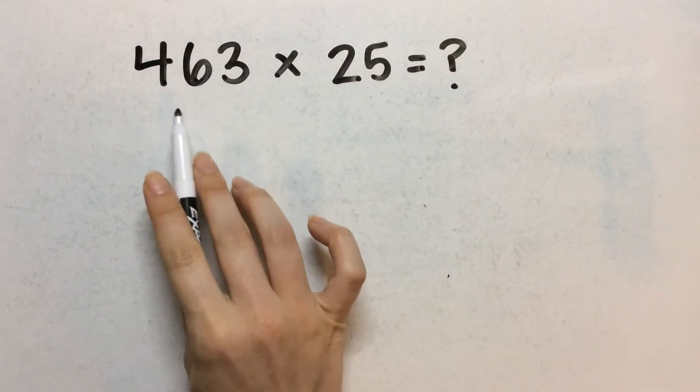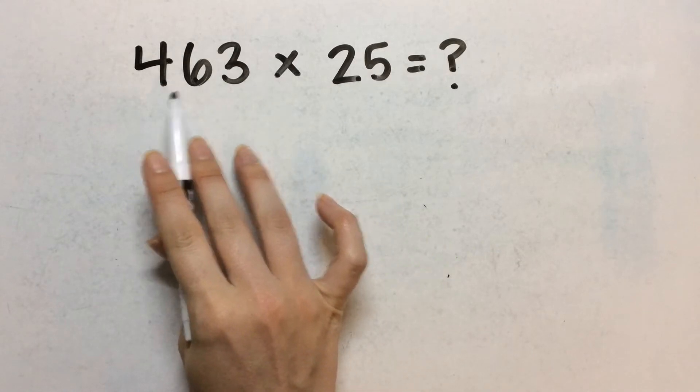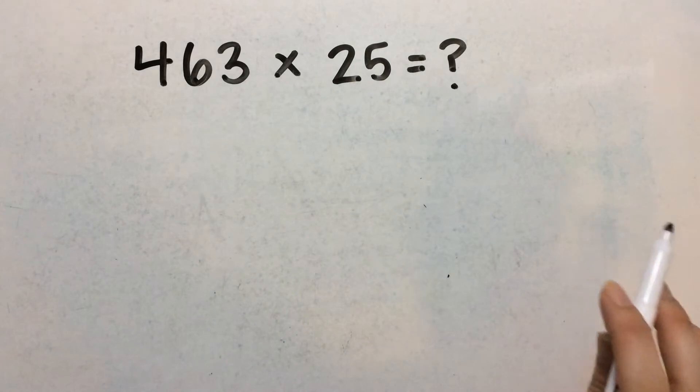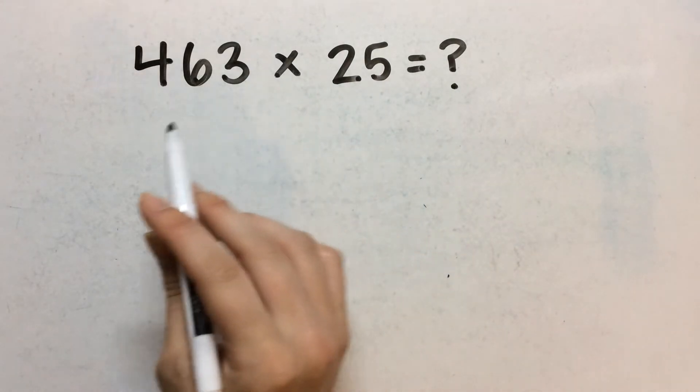In this video I'm going to show you two ways to multiply a three-digit number by a two-digit number. We're going to use a standard algorithm and an area model.